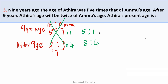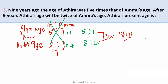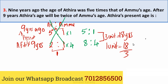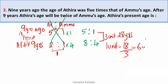Nine years ago is the condition, and after 9 years is the second condition. The present age is here. We find that 3 units equals 18. So 1 unit equals 18 divided by 3, which is 6. When we look at the age of 6, we go back to the age question.